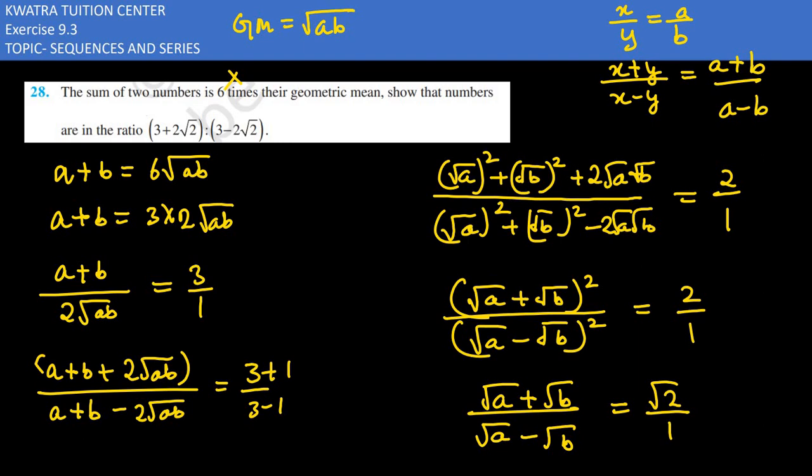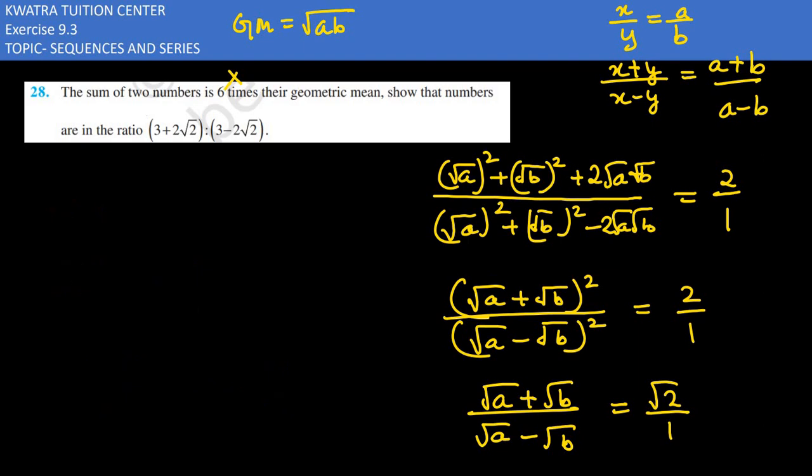We have to find it as (√a + √b)/(√a - √b) = (√2 + 1)/(√2 - 1). Again applying componendo and dividendo here. What will you get? (√a + √b + √a - √b)/(√a + √b - √a + √b).